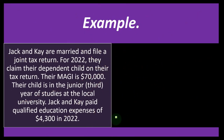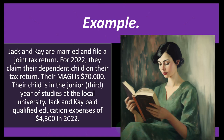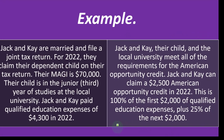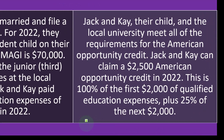Let's look at an example. Jack and Kay are married and file a joint tax return. For 2022, they claim their dependent child. Their MAGI is $70,000. Their child is in the third year of studies at the local university. Jack and Kay paid qualified education expenses of $4,300 in 2022, and they met all of the requirements for the American Opportunity Credit. So how much do they get?